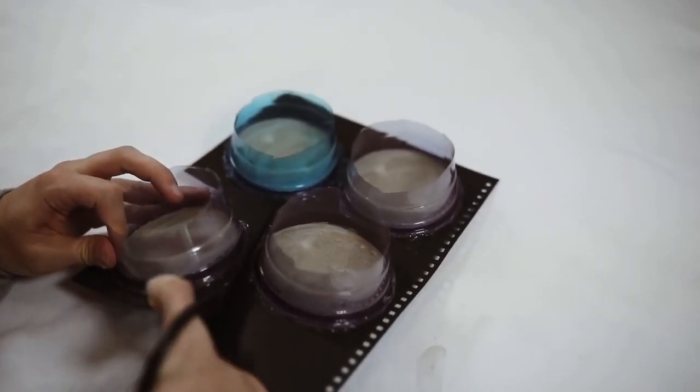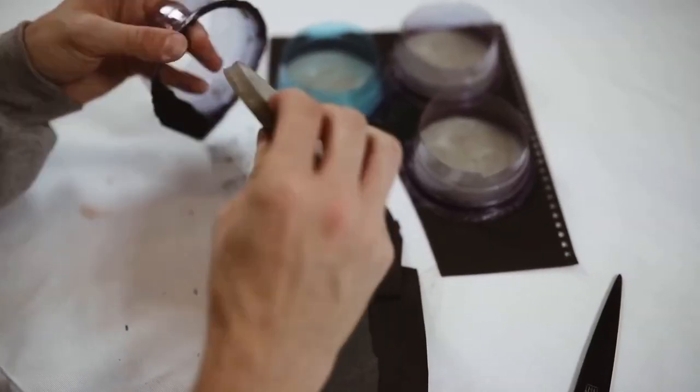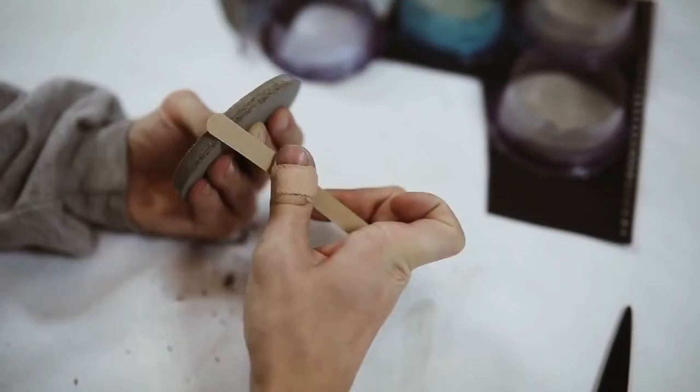Let that cure overnight, and once it is fully cured you could basically demold your new set of coasters by pulling off that notebook cover. This is what they end up looking like.